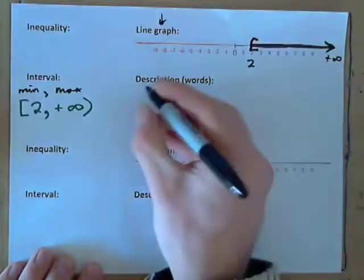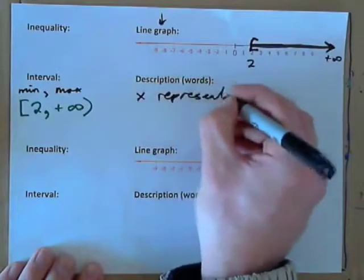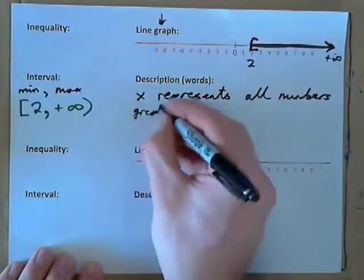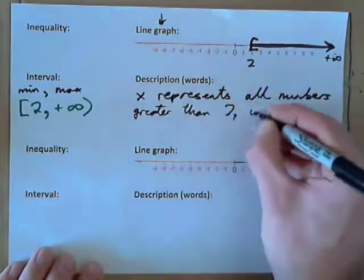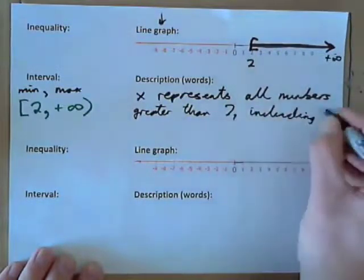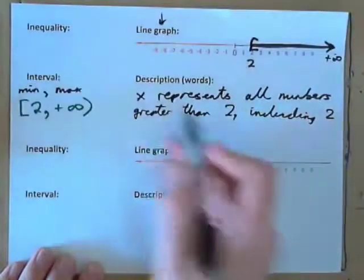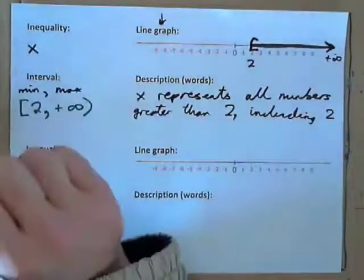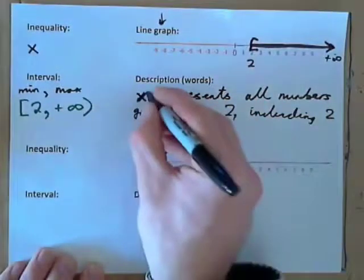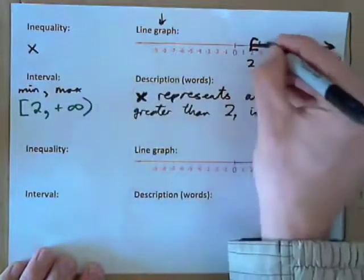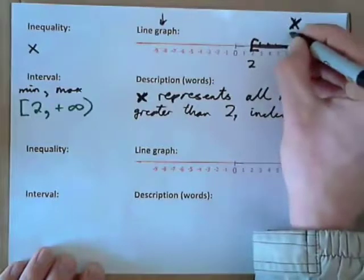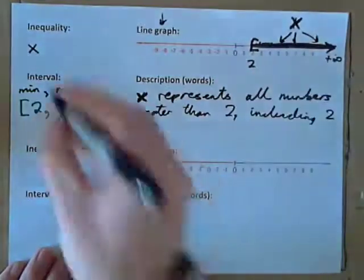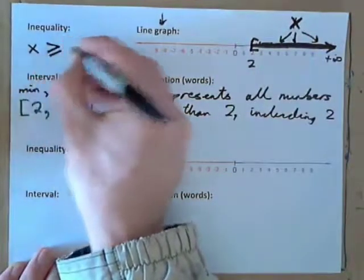Now we have the line graph. Probably easiest now to do the description: x represents all numbers between 2 and positive infinity, including 2. Or you could say, x represents all numbers greater than 2, including 2. As an inequality, that's all numbers greater than or equal to 2 — x is greater than or equal to 2.